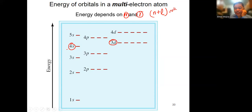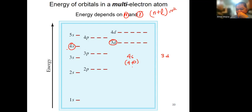The N plus L rule: when you add N and L together, the lower sum has lower energy and the higher sum has higher energy. For 4s: N=4, L=0, sum=4. For 3d: N=3, L=2, sum=5. That's why 4s has lower energy compared to 3d, even though 3d has a lower principal quantum number.